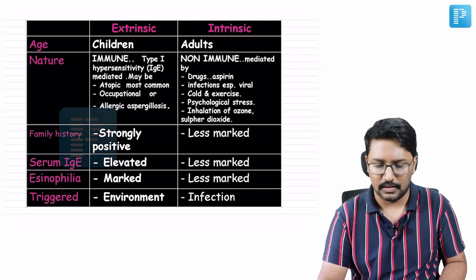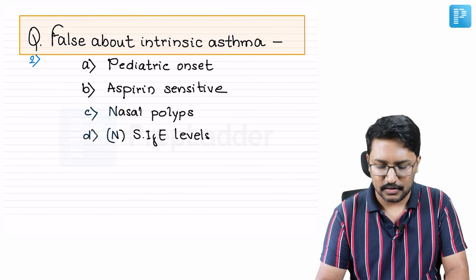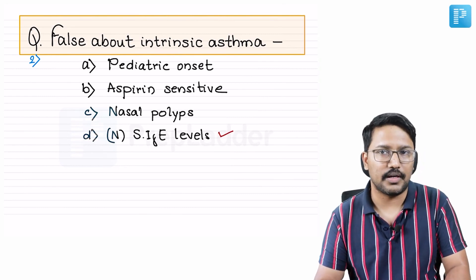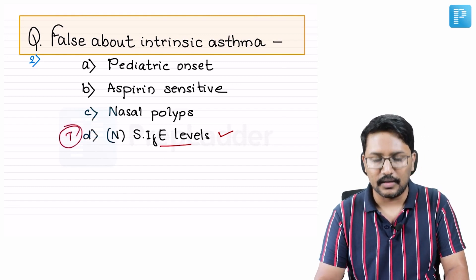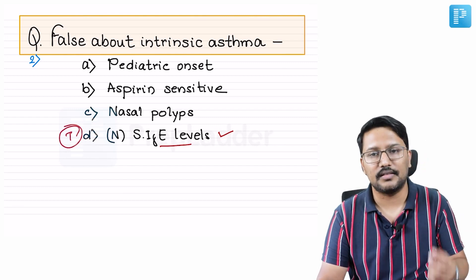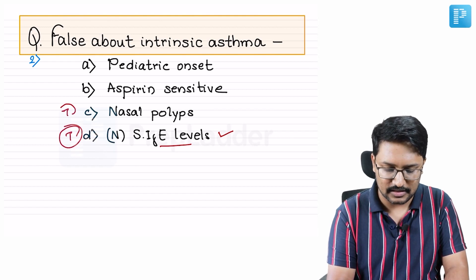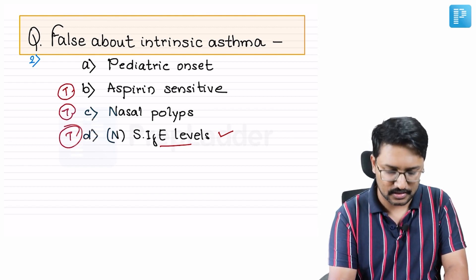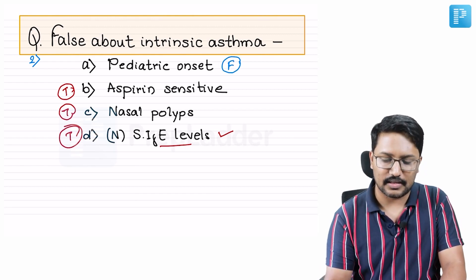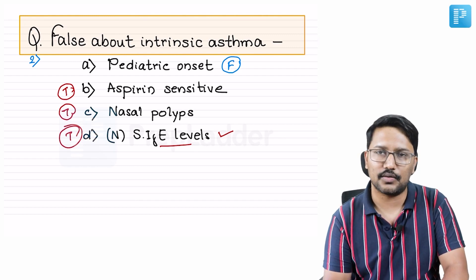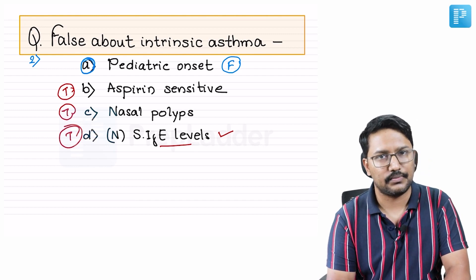Returning to the question about intrinsic asthma: since it is non-immune mediated, IgE levels are normal — that is a true statement. Nasal polyps can be seen in intrinsic asthma as part of Samter's triad, which includes nasal polyps, aspirin sensitivity, and asthma — all true statements. Pediatric onset is a false statement because intrinsic asthma is typically adult-onset. Therefore, the correct answer is option A — pediatric onset.